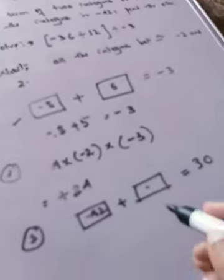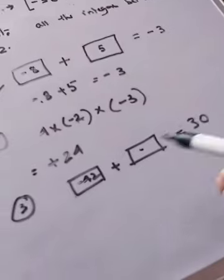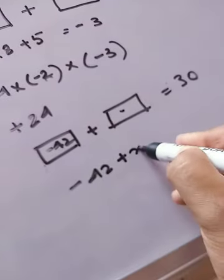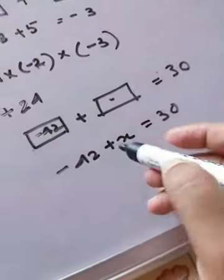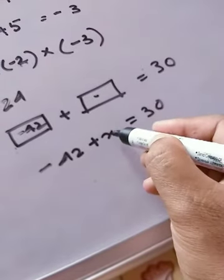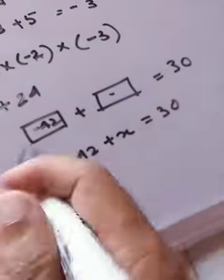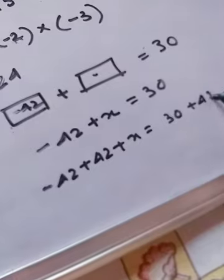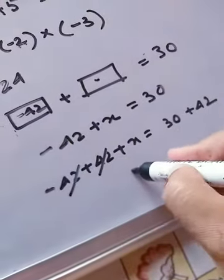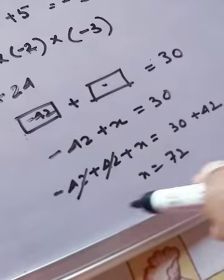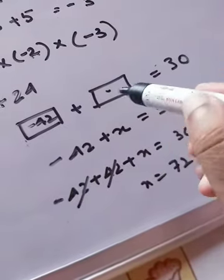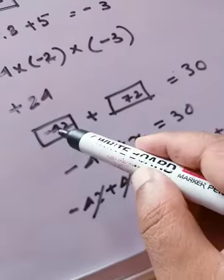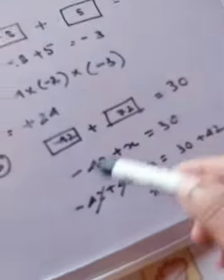Using a simple equation: let the unknown integer be x. So x plus (minus 42) equals 30. To isolate x, add 42 to both sides. Minus 42 plus 42 cancels out, leaving x equals 30 plus 42, which is 72. So the second integer is 72. You can verify: 72 plus (minus 42) equals 30.